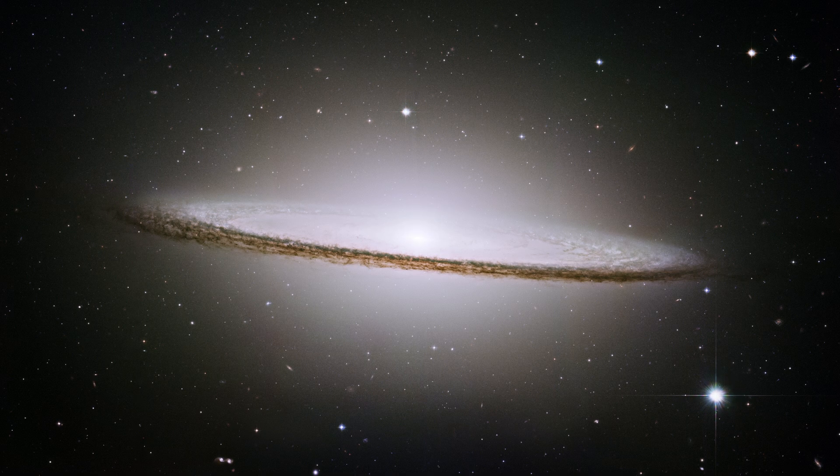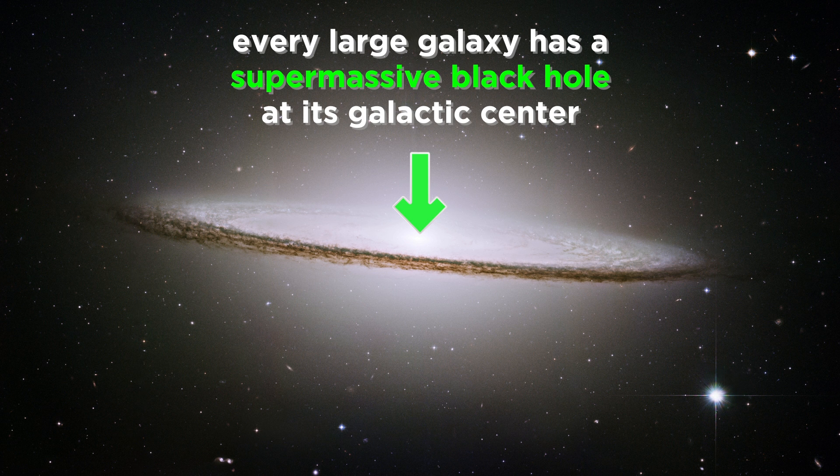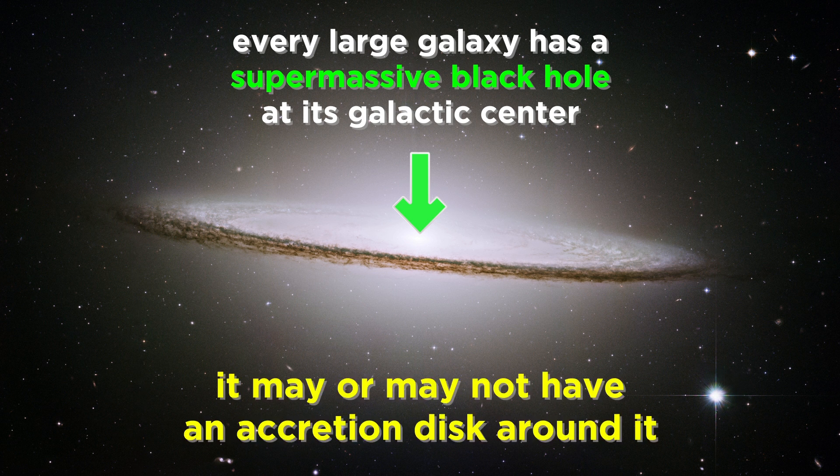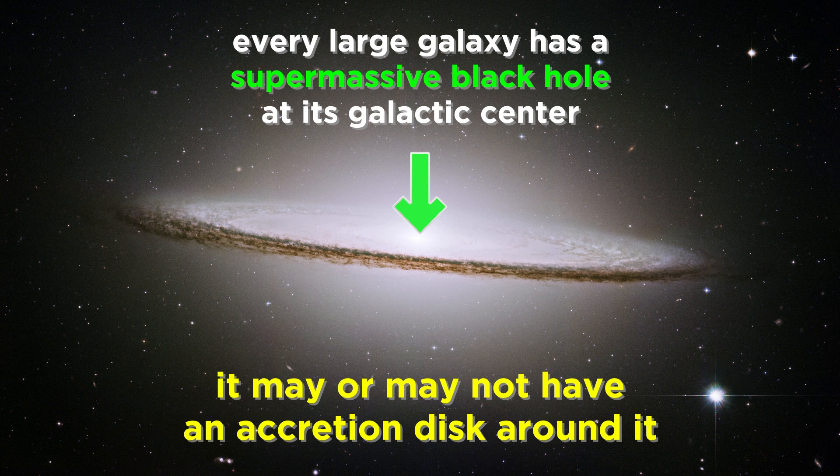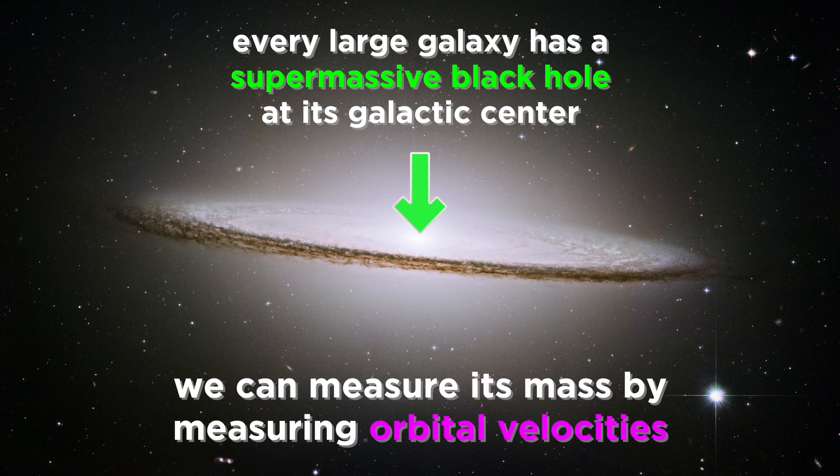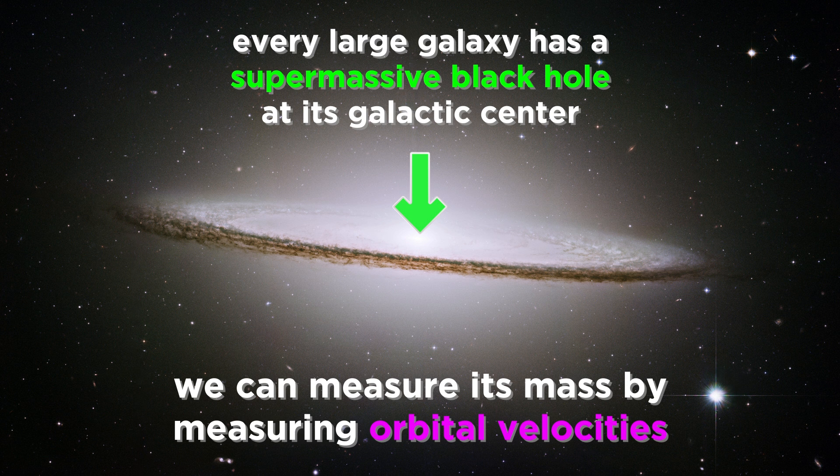But this scenario is not limited to young galaxies. We believe that every single large galaxy in the universe has a supermassive black hole at its galactic center. Some are not surrounded by an accretion disk of gas and thus are not quasars, presumably because the surrounding gas has already fallen into the black hole long ago. But we can still measure the mass of the black hole by measuring how fast surrounding objects orbit around it, and calculations tell us that these are supermassive indeed.